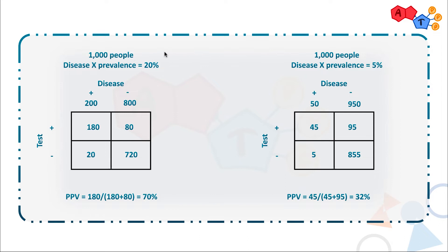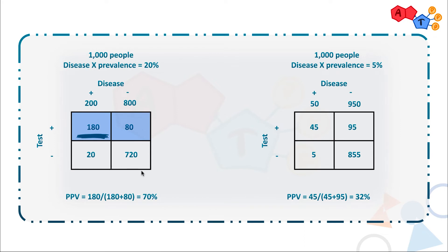Let's imagine we have two different populations, each with 1000 people. In the first, we're studying disease X with a prevalence of 20%; in the second, disease X has a prevalence of 5%. Assume the sensitivity and specificity of the test are stable at 90% each. For the 20% prevalence population: 200 have the disease, 800 don't. 90% of 200 is 180 true positives, leaving 20 false negatives. 90% of 800 is 720 true negatives, leaving 80 false positives. The positive predictive value is 180 over 180 plus 80, which is roughly 70%.